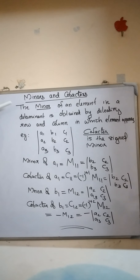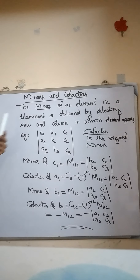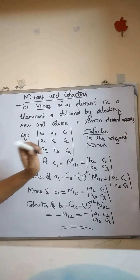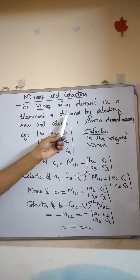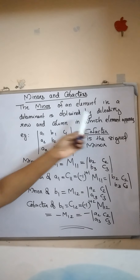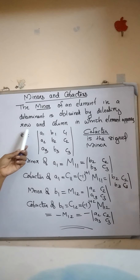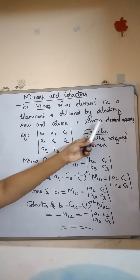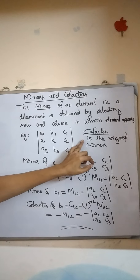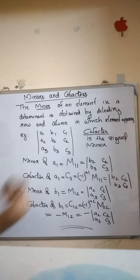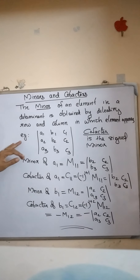Today we discuss the topic Minors and Co-Factors. The minor of an element in a determinant is obtained by deleting the row and column in which the element appears. The co-factor is the signed minor.